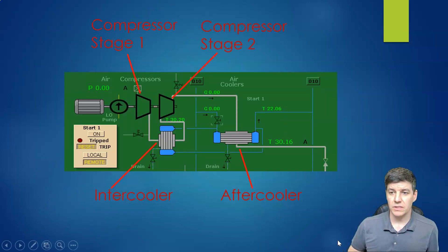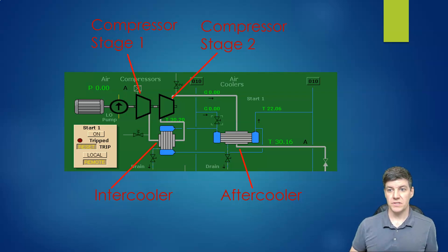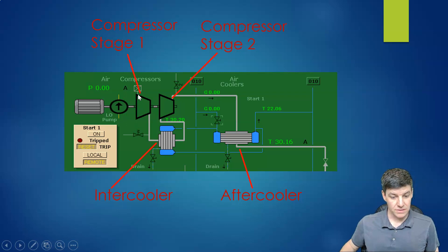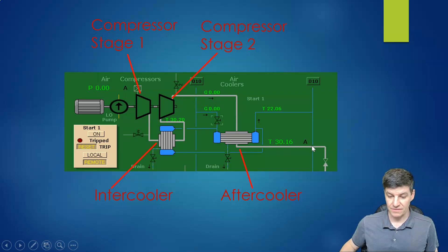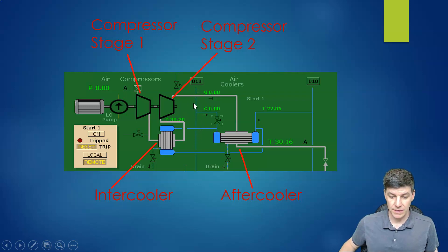Looking at how that's laid out on our simulator screen: we start with our air compressor going through stage one compression, the air leaves and goes through an intercooler, then through a second stage compression, and finally through an aftercooler at the end. Our air compression system is water-cooled, so both the intercooler and the aftercooler are cooled using fresh water.